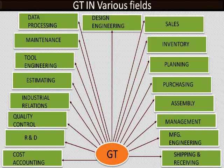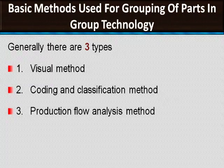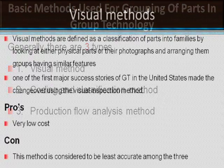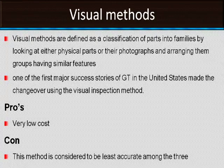What are the best methods to group parts based on Group Technology? There are three types: one is the visual method, the second is the coding and classification method, and the third is the production flow analysis method. Visual methods are defined as a classification of parts into families by looking at physical parts or their photographs and arranging them into groups having similar features. One of the first major success stories of Group Technology in the United States used the visual inspection method.